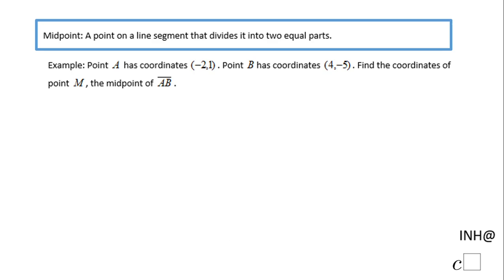Welcome or welcome back to I Need Help at C-Square. In this example, we're going to find the coordinate of the midpoint of a segment AB. The endpoints are A at (-2, 1) and B at (4, -5).